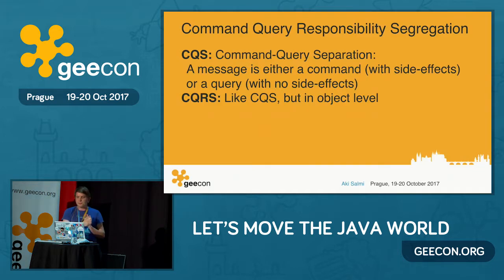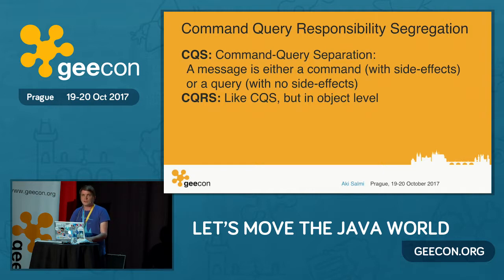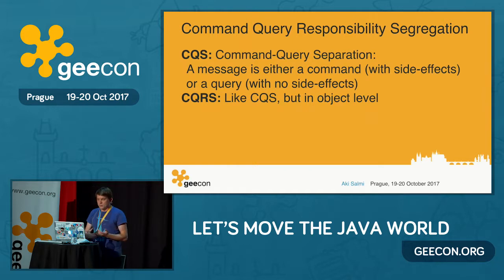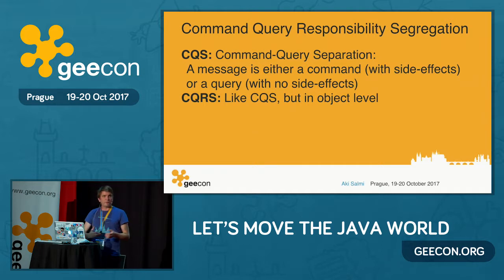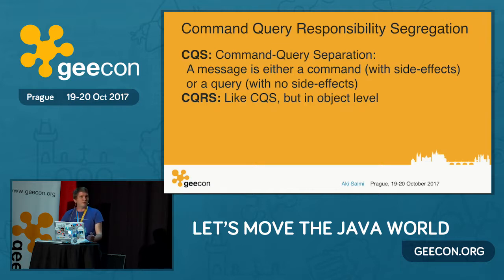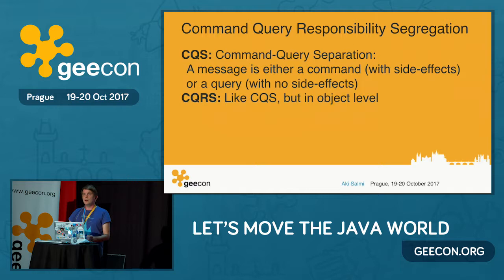Command Query Responsibility Segregation — when I describe it, I typically start with CQS, Command Query Separation, where a message is either a command with side effects or a query with no side effects. Of course, if there is a pop method for an array that takes an item and also returns the new item, sometimes commands and queries must actually be combined. CQRS takes this to the object level: an object is either only a command or a query. Simple as that.